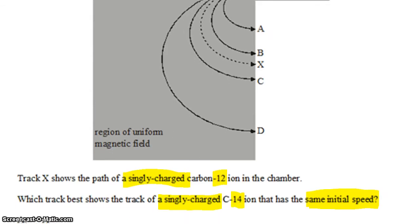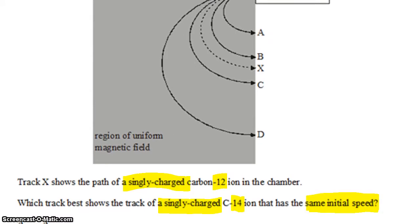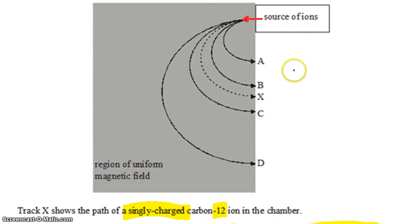So what's different if we fire carbon-14 ion that's also singly charged and has the same initial speed? Well, we know that the force produced on a moving charge in a magnetic field is QVB sine theta. We can ignore the sine theta because we've already determined that the ions are moving perpendicular to the magnetic field, so that sine of theta is going to be one, QVB.